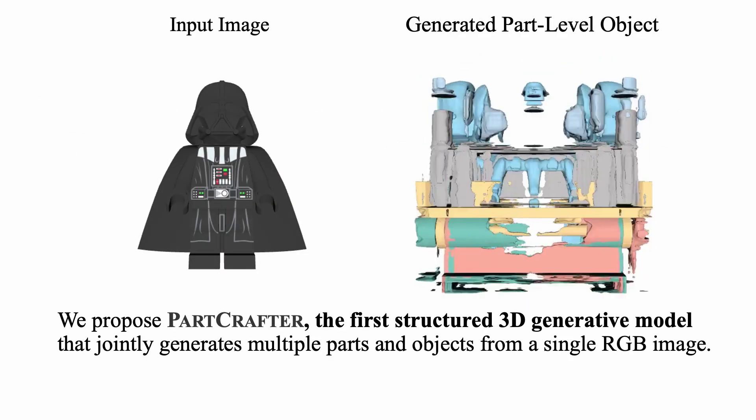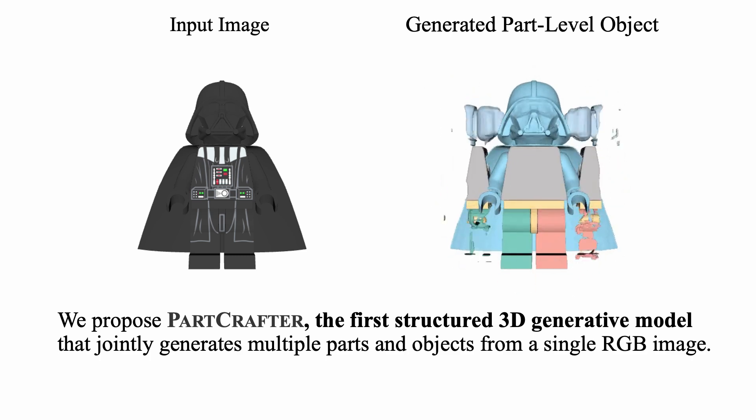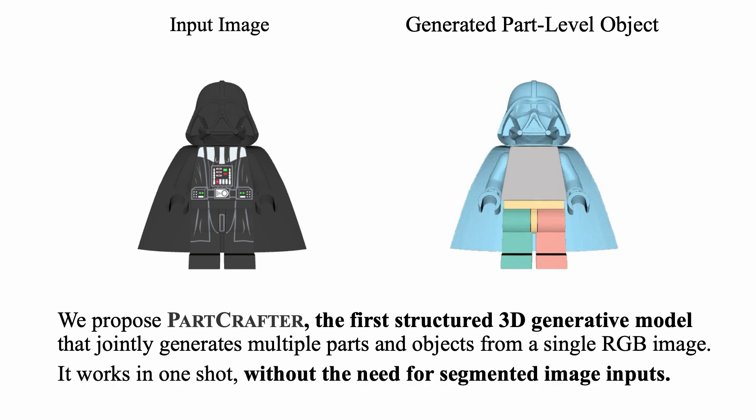We propose PartCrafter, the first model to generate structured 3D objects with multiple parts or 3D scenes with several objects directly from a single RGB image. It works end-to-end in one shot, without relying on segmentation or multi-stage pipelines.